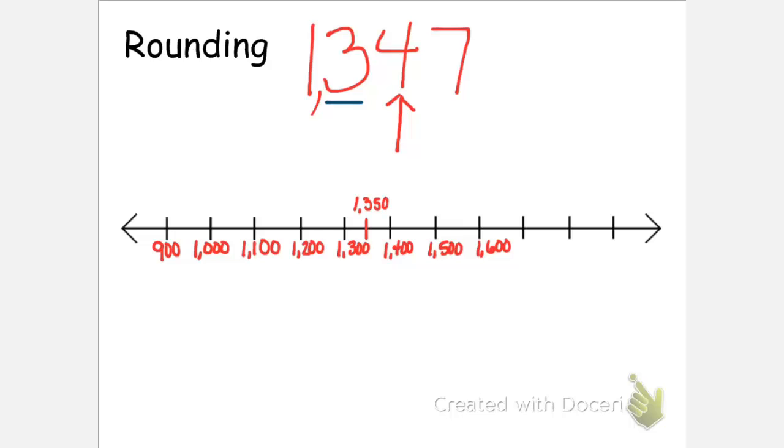You can see that 1347 would be placed on the number line between 1300 and 1400. The number 1350 is exactly in between 1300 and 1400, exactly in the middle. And 1347 would be a little to the left of that. So now we just have to decide of those two hundreds that 1347 is in between, 1300 and 1400, which one is 1347 closer to? And we can see that since it's a little to the left of the 1350, that it is in fact closer to the 1300. And so that would be the value that we would round to.